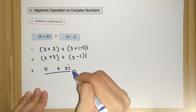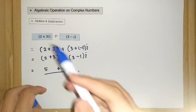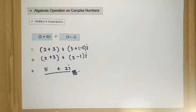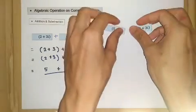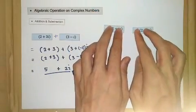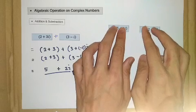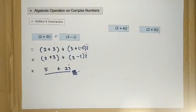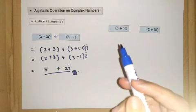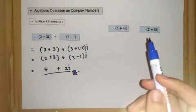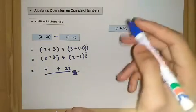What about the subtraction operation? Again we learn it through examples. So let's say we have another two complex numbers: 5 plus 4i and the second one is 2 plus 3i, so let's subtract them.